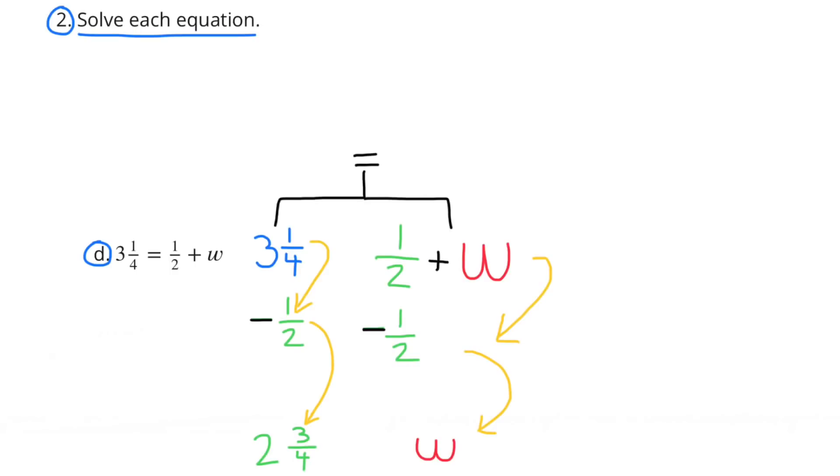Problem D: 3 and 1 fourth equals 1 half plus w. I set this one up like the hanger that we practiced in the previous lesson. If I want to find out the value for w, I have to get rid of the 1 half. So I take away 1 half from the w side, and then I take away 1 half from the 3 and 1 fourth side to make sure that they still balance. So now at the very bottom, I have a w all by itself, and a 2 and 3 fourths. Because 3 and 1 fourth minus 1 half equals 2 and 3 fourths. The value for w is 2 and 3 fourths.